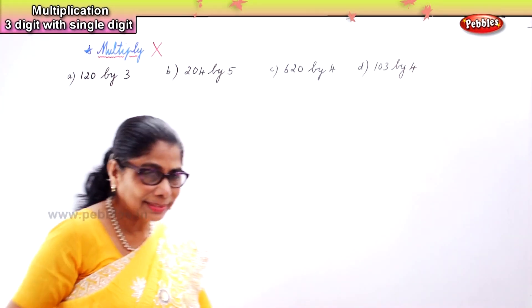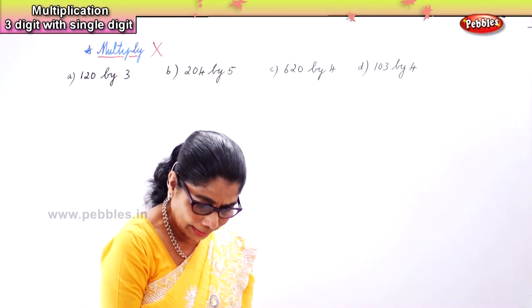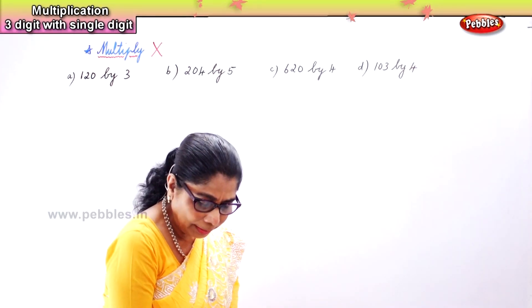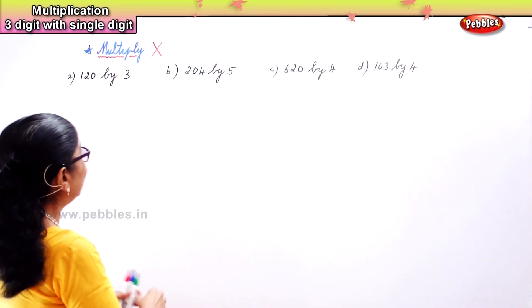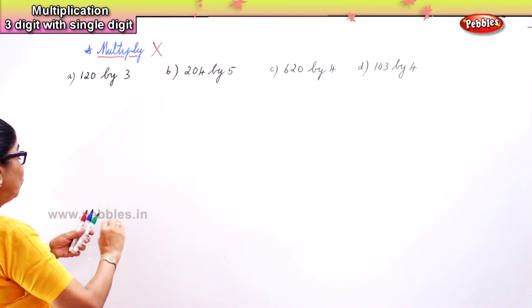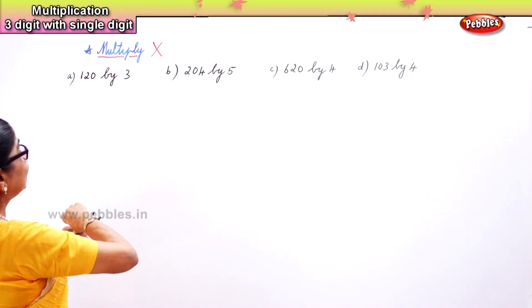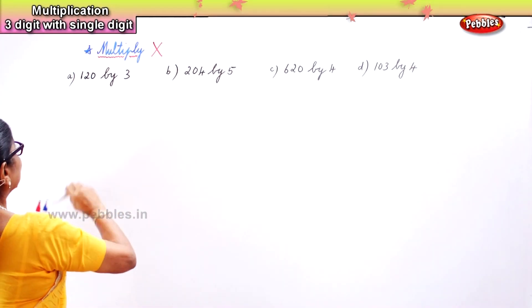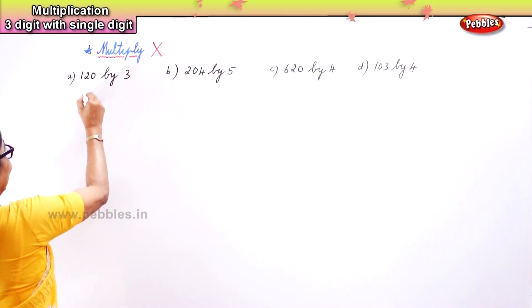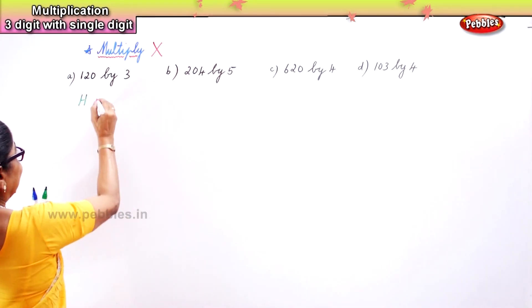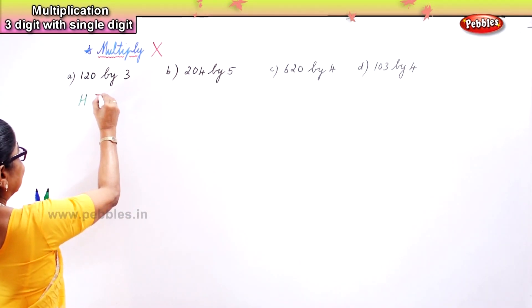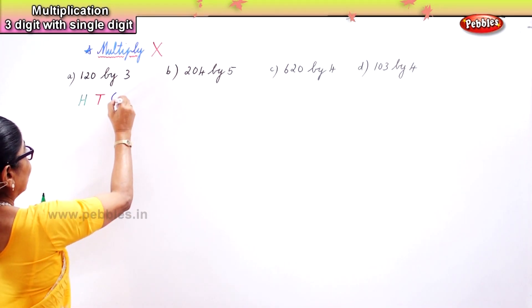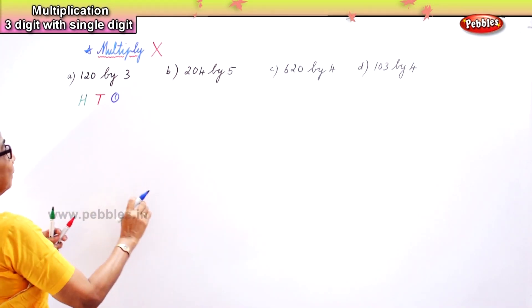Now when you get a sum like this, again you need to write down the place value before we multiply. So first put the place value — place the numbers correctly — so you have the hundreds place, tens place, and ones place. You've got to write this, then place the number.